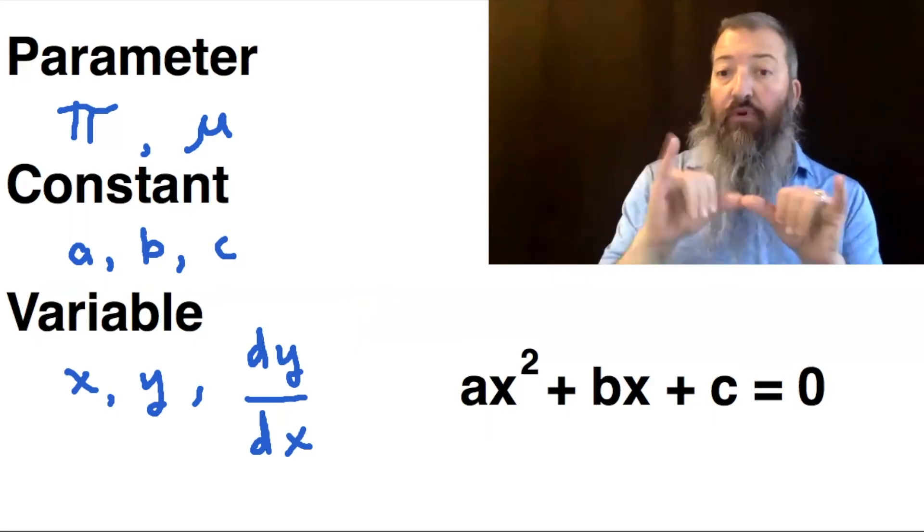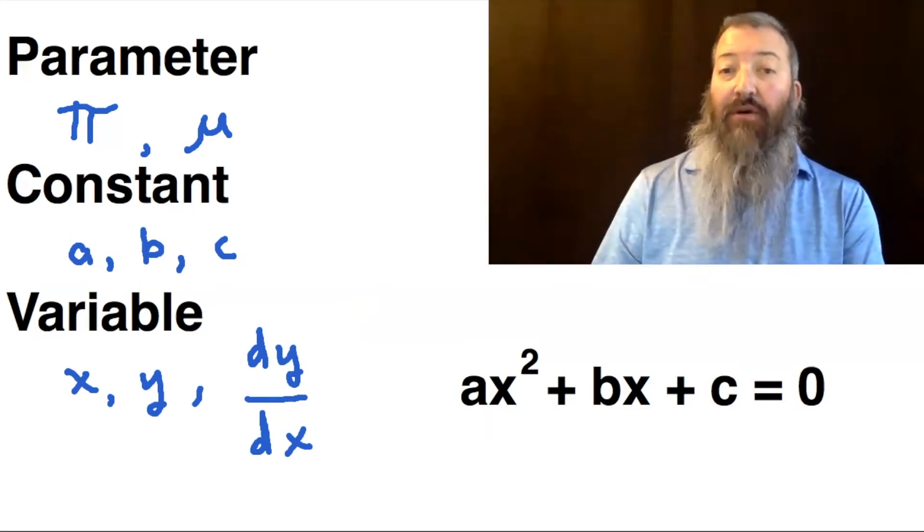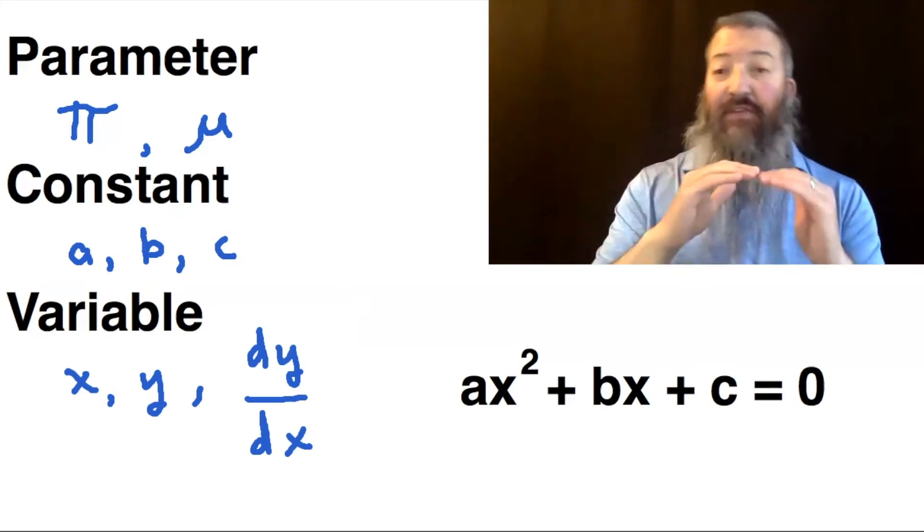An example of a known parameter is pi. It is the ratio of a circle's circumference to its diameter, and it's a constant.